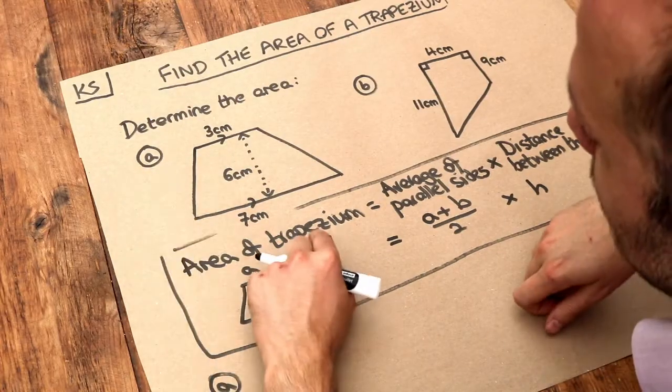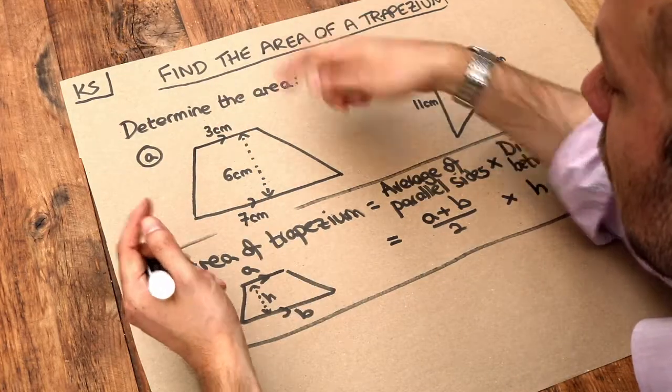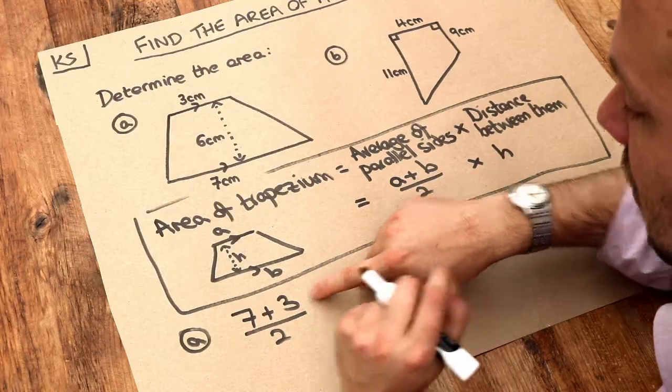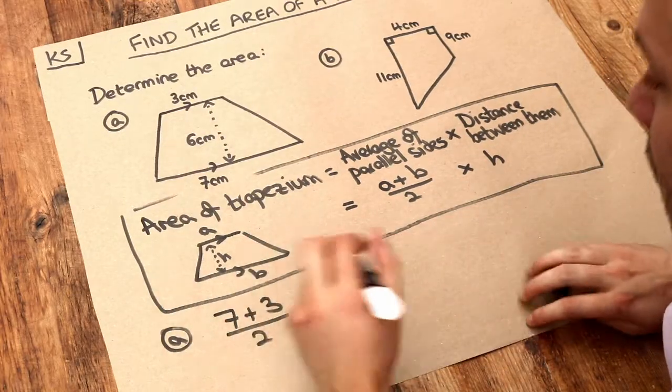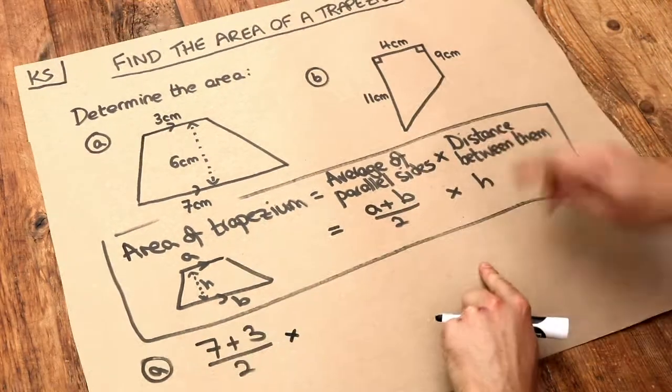Now do that in your head halfway between seven and three is five but if you want to use this formula we just add them together and divide by two that will give us five and then we times by the distance between them.